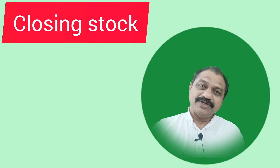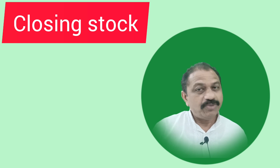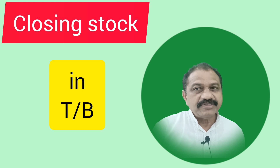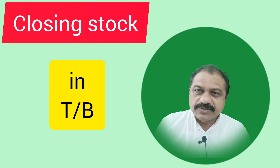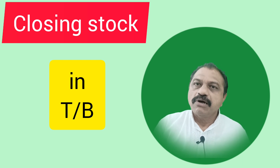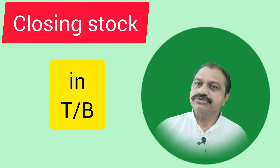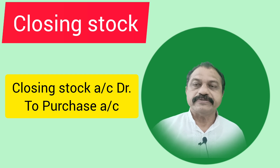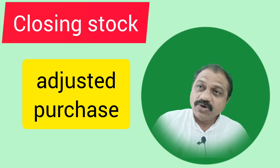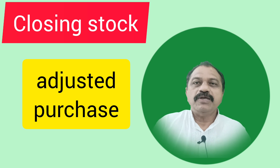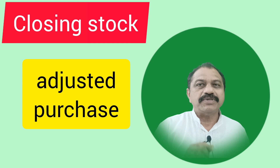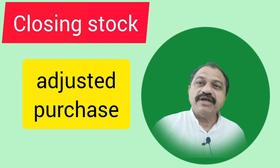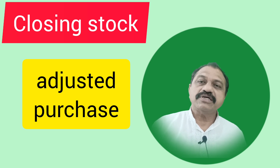Closing stock may also be given in the problem in another style. The second method is: closing stock may be given in the trial balance as a debit balance. If closing stock is given in the trial balance, it implies that an adjusting journal entry has already been passed for closing stock. For that purpose, the adjusting journal entry is closing stock account to purchases account. This implies that closing stock is already adjusted with purchases, meaning purchases given in the trial balance is an adjusted purchase — that is after deduction of closing stock. Therefore, closing stock need not again be taken at the credit side of the trading account; it will appear at the asset side of the balance sheet only.